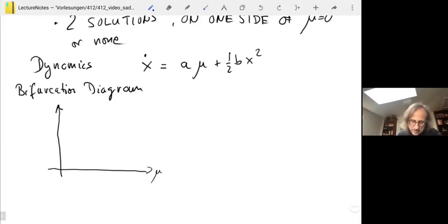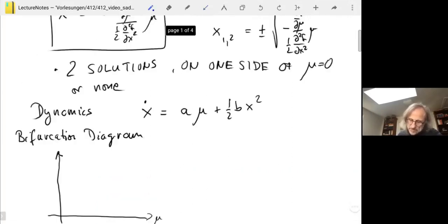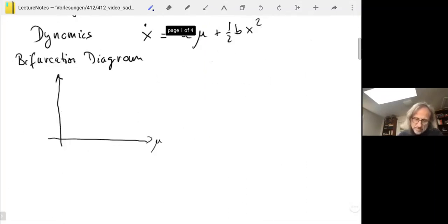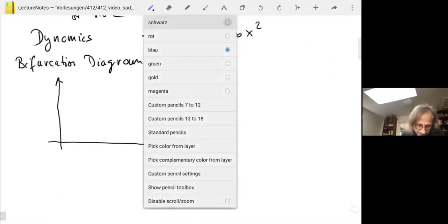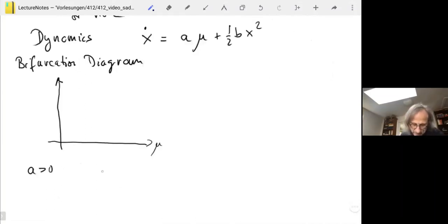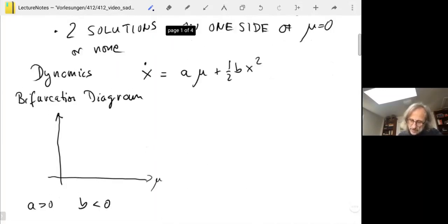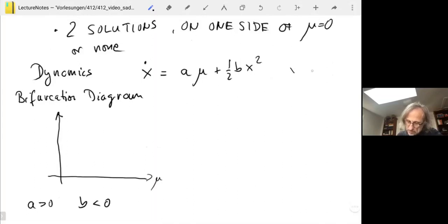What do we have? Depending on the sign of a and b, let's say we have a is positive and b is negative. If a is positive and b is negative, then we have x_1,2 equals the square root of minus a over 2b times mu. In this case, a over b is negative, so we have a solution if mu is positive. Let me put mu equals zero here. We have a solution and mu is positive, so we have a parabolic shape here for the square root. These are the fixed points.